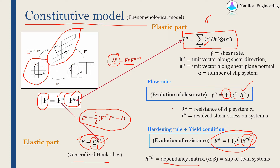Comparing this to finite deformation plasticity theory: the evolution of resistance equation gives us both yield condition and hardening rule, and the evolution of shear rate equation is equivalent to the flow rule. In summary, the constitutive model gives us a relation between F and stresses by decomposing F into F^E and F^P. F^E directly relates to the stress tensor. For F^P we convert to L^P, which relates to shear rate, which depends on resolved shear stress and finally the stress tensor P — so it is a very complicated but complete relation between F and P.